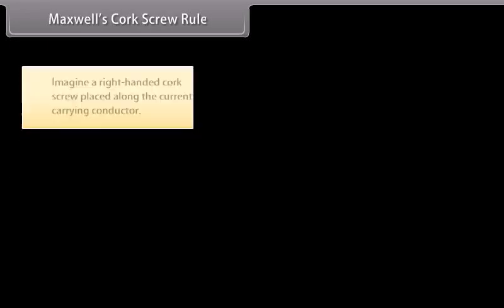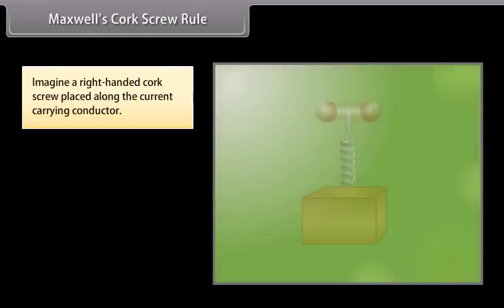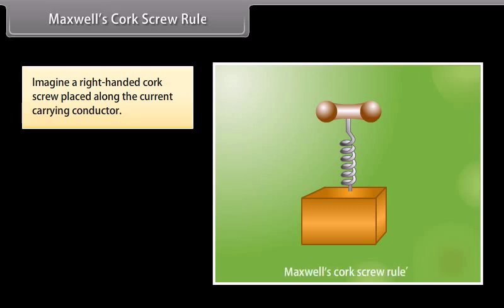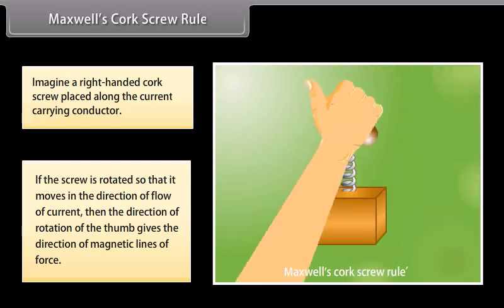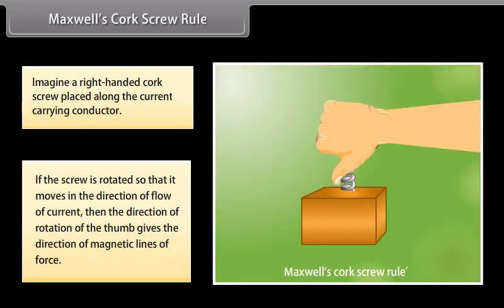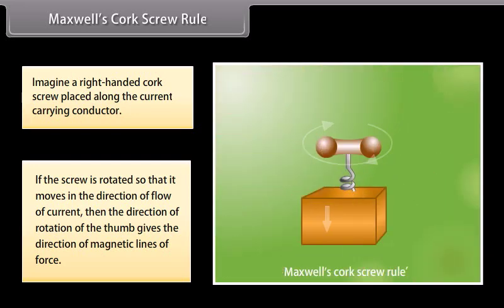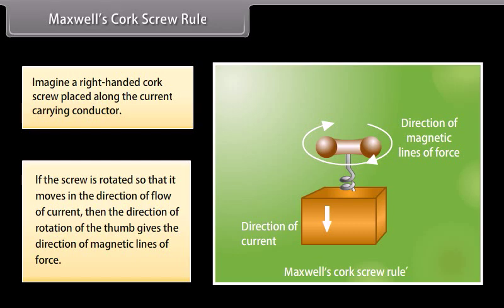Maxwell's Corkscrew Rule: Imagine a right-handed corkscrew placed along the current-carrying conductor. If the screw is rotated so that it moves in the direction of flow of current, then the direction of rotation of the thumb gives the direction of magnetic lines of force.